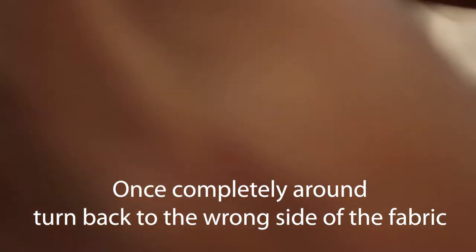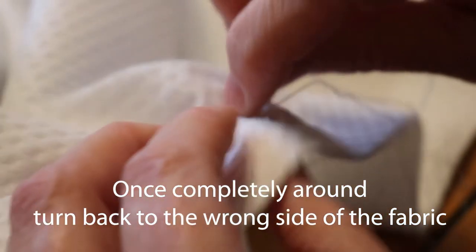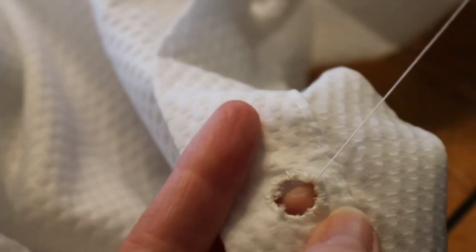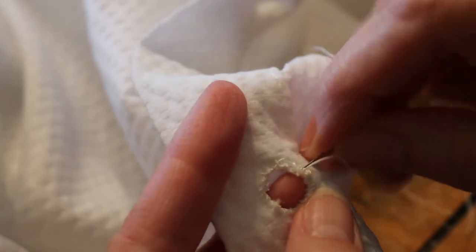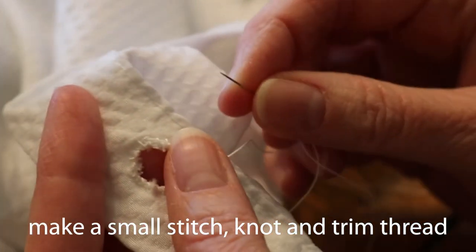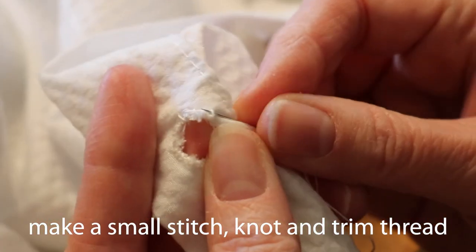Once you have sewn completely around, turn back to the wrong side of the fabric. Make a small stitch, knot and trim the thread.